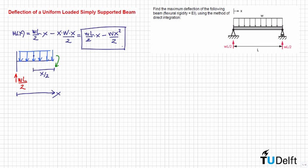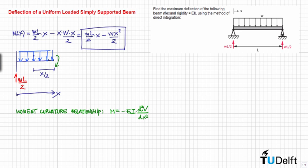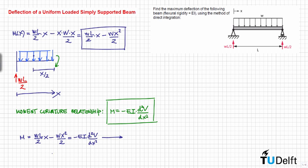Now we need to calculate the curvature of the beam using the moment-curvature relationship: M = −EI · d²v/dx². Substituting our moment expression and integrating once, we get EI · dv/dx = wL/4 · x² − wx³/6 + A, where A is the constant of integration. This is also equal to the slope θ.